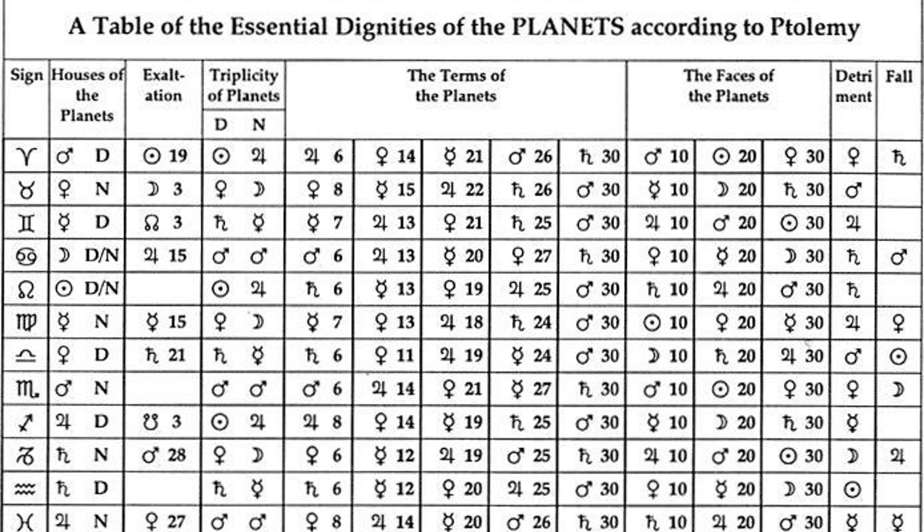Capricorn is ruled by Saturn. Aquarius is ruled by Saturn traditionally, and by Uranus modern. Pisces is ruled by Jupiter traditionally, and Neptune modern.